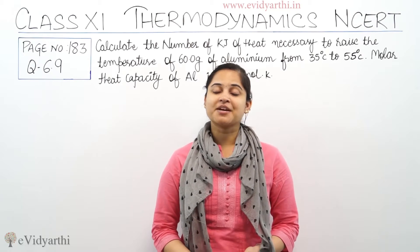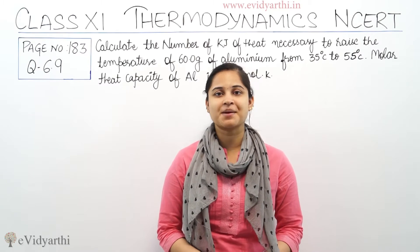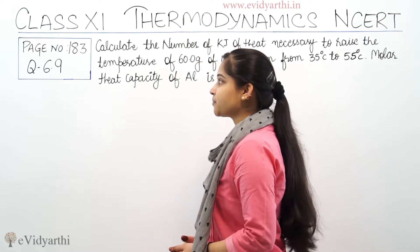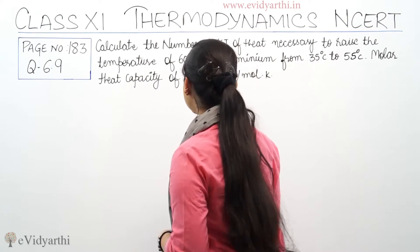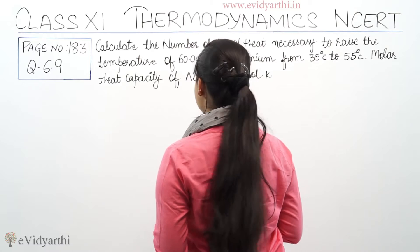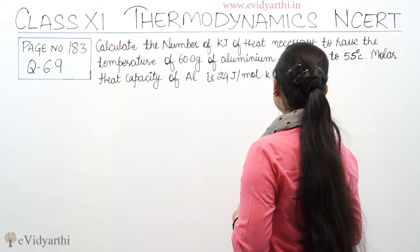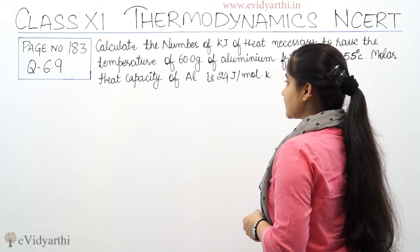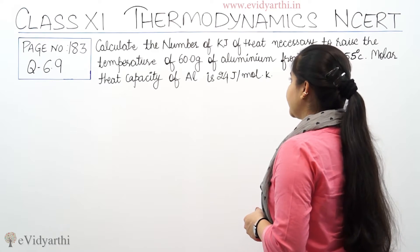Hello friends, I am Rakhi and I am back with another question of NCERT chapter 6, Thermodynamics. In this video, I will be discussing question number 183. The question is: calculate the number of kilojoules of heat necessary to raise the temperature of 60 grams of aluminium from 35 degrees Celsius to 55 degrees Celsius. The molar heat capacity of aluminium is 24 joule per mole per Kelvin.